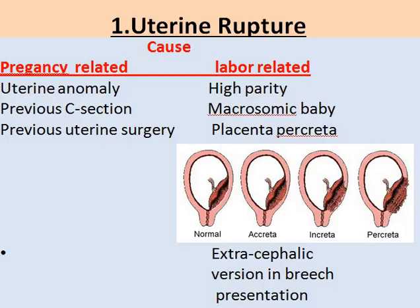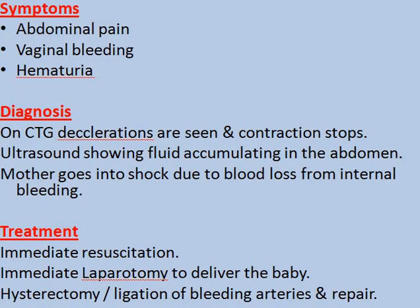Whenever uterine rupture occurs, the presenting symptoms include increased abdominal pain, vaginal bleeding, and even hematuria. Diagnosis is confirmed on fetal CTG, which shows deceleration and even contraction stops. Ultrasound shows fluid accumulation in the abdomen, indicating a large amount of blood due to rupture of the uterine vessels, and the mother goes into shock from increased blood loss.